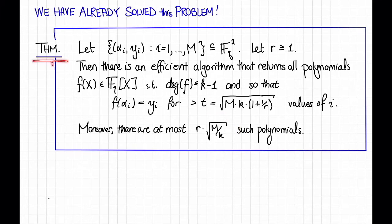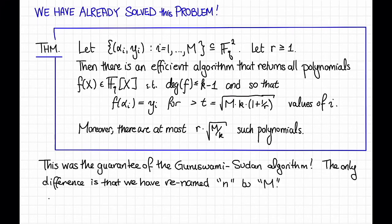Okay, so this theorem looks a little bit different than it did when we stated it before. The only difference is that this thing here I've all of a sudden started calling capital M when we used to be calling it n. However, you can go back and check that if you just change all of the n's to a capital M, in fact nothing changes. The important thing about getting to rename n to some capital M anything we want is that capital M can actually be larger than n. In particular, these alpha i's here don't need to be distinct. Okay, so what does this have to do with list recovery?